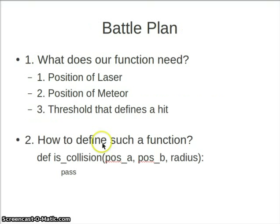Let's make a battle plan how we can go about this. What does our function need to be able to do? Or what does our function need to work? The first thing this function needs is to figure out what is the position of the laser. Second, what is the position of the meteor. And third, we have to give it a threshold that defines if we have a hit or not. Now the question, how do we define a function that works in lots of different cases and just cares about two objects with positions and the threshold that defines a hit?